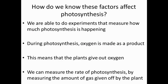So how do we know these factors affect photosynthesis? How can we measure or test it? You can actually do experiments that measure how much photosynthesis is happening. During photosynthesis, oxygen is made as a product, so the plants give out oxygen — we talked about this when we talked about leaf structure. The oxygen comes out of the leaf through the stomata. So we can measure the amount of photosynthesis by the amount of gas given off. If it gives off more oxygen, that must mean the reaction is happening more.